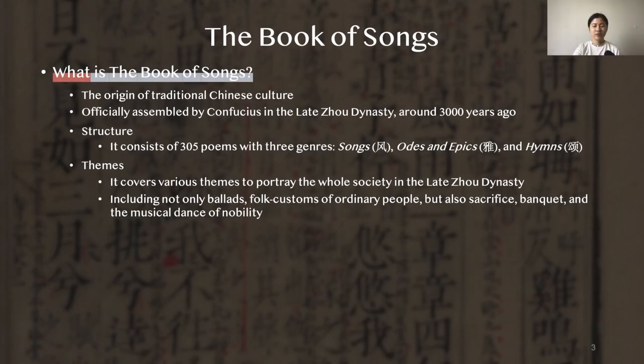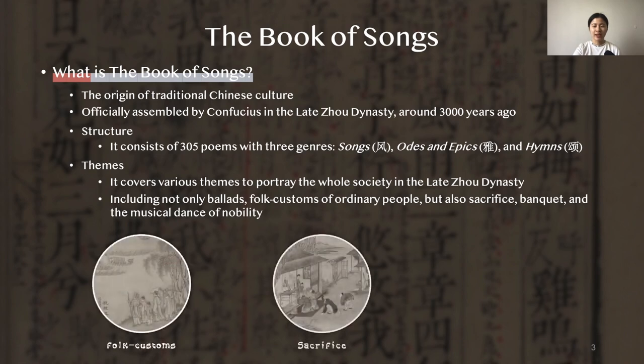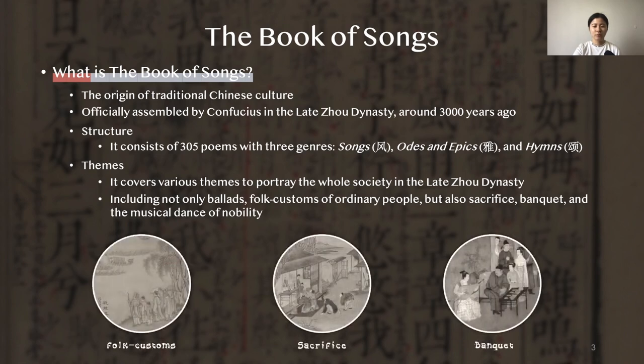Let's first look at the background. The Book of Songs consists of 305 poems. It was officially assembled by the famous Confucius, who lived in the late Zhou Dynasty about 3,000 years ago in China. The poems cover many themes to portray the whole society in the late Zhou Dynasty, including ballads and folk customs of ordinary people, but also sacrifice and the banquet of nobility.